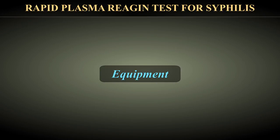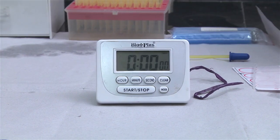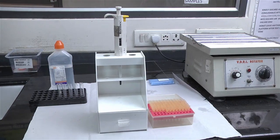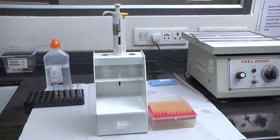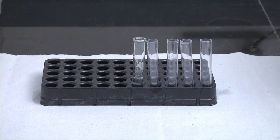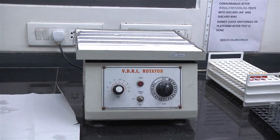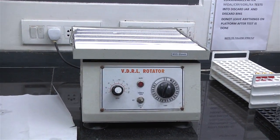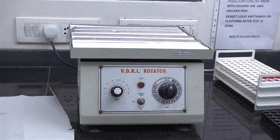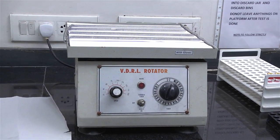Equipment required: stopwatch, pipette and tips, test tubes, and a mechanical rotor at 180 rotations per minute circumscribing a circle of 2 cm in diameter on a horizontal plane.